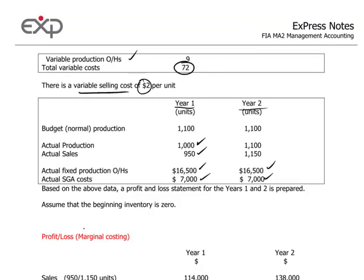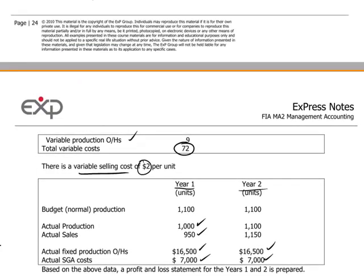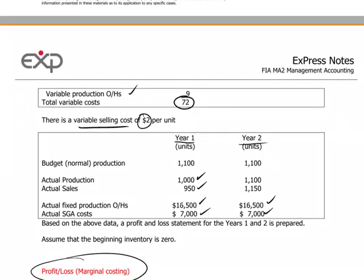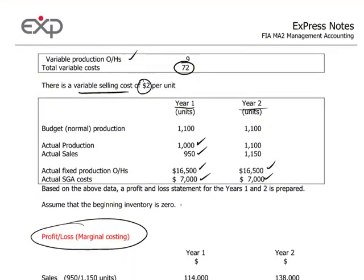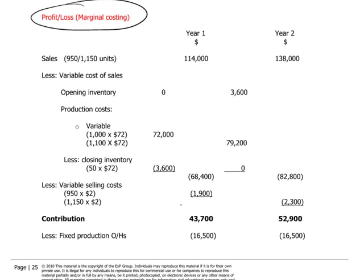What we want to do is produce a profit and loss account which reflects the facts shown here. In other words, having produced 1,000 units of product and having sold 950 units, how is our profit and loss account going to look? Let's walk through year one calculations, and then the candidate will have a chance to work out the year two calculations.